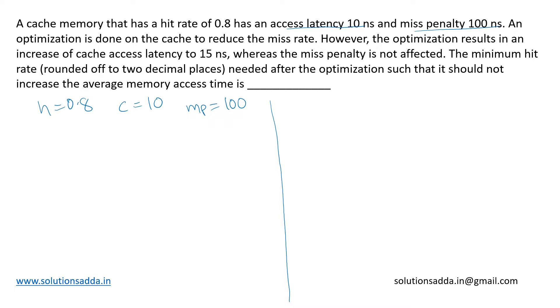Since they have not talked about the main memory access time in this case, we take the average access time to be hit rate into cache access time plus miss rate, which is 1 minus h, times cache access time plus the miss penalty.